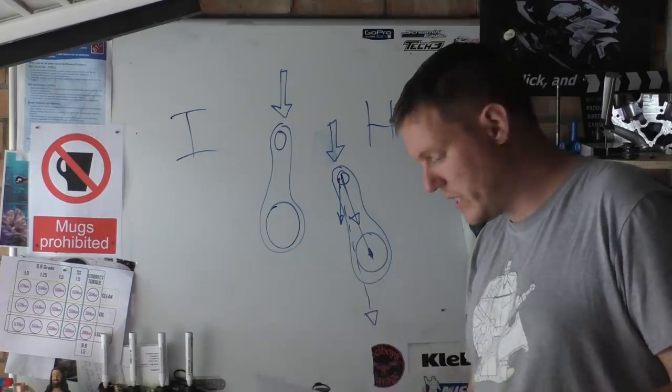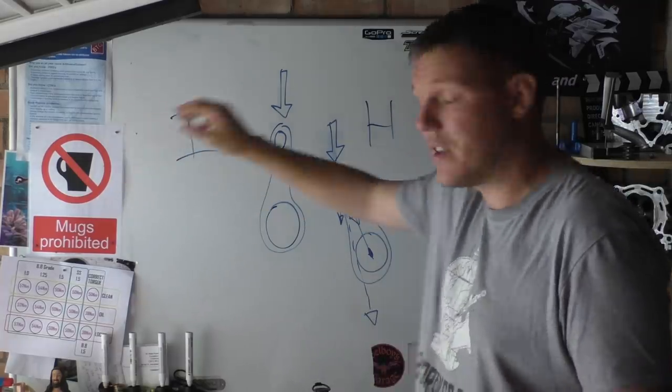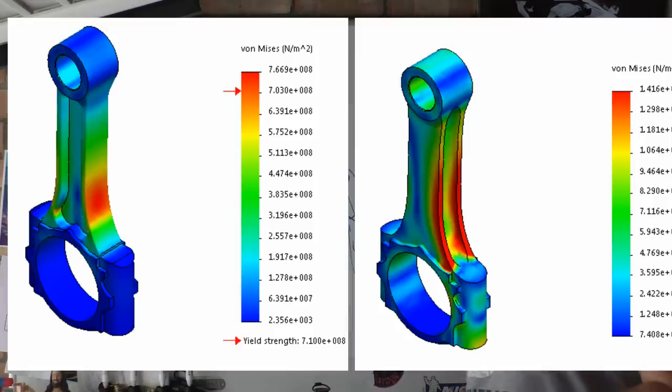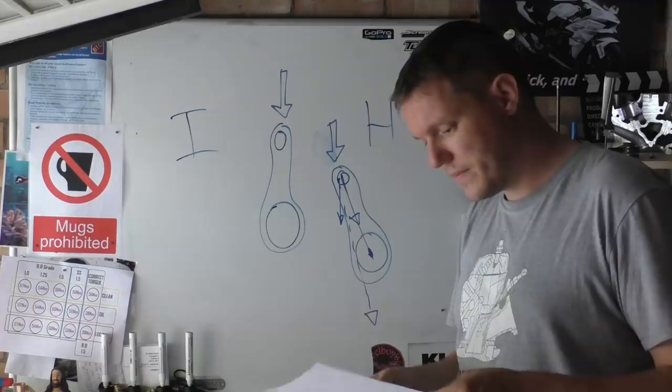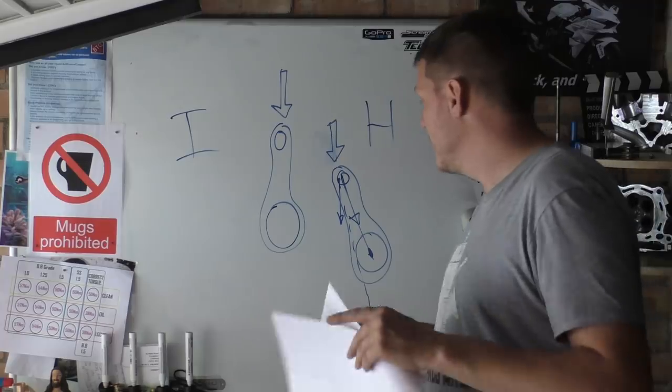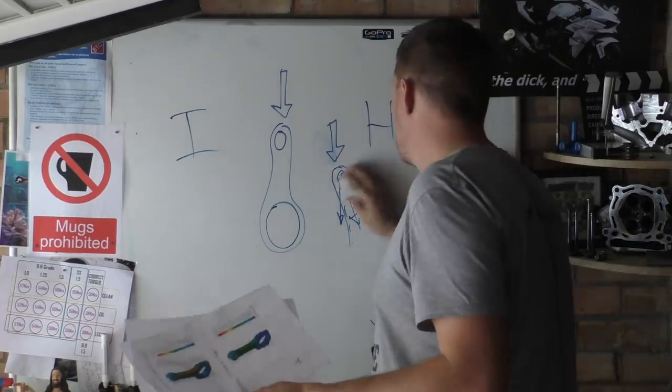But here's two pictures, you can see this picture again, I-beam on this side, H-rod on this side. And you can see that the distribution of stress along that H-rod along this side is a lot higher and a lot more focused than it is for the I-beam.